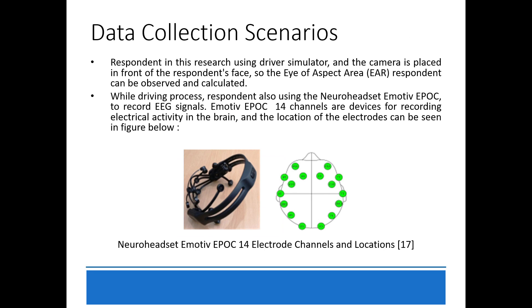Respondents in this research used a driver simulator, and a camera is placed in front of the respondent so that the eye aspect ratio of each respondent can be observed and calculated. During the driving process, respondents also used the Emotiv Epoch neural headset to record EEG signals. The Emotiv Epoch 14-channel device records electrical activity in the brain, and the location of the electrode nodes can be seen in the figure below.